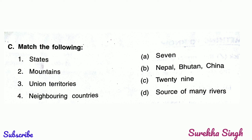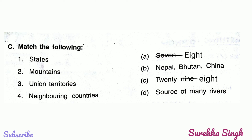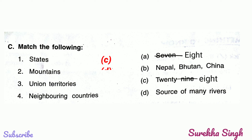Question C: Match the following. Before doing this question, let me tell you something about our states and union territories. At present we have 28 states and 8 union territories, so I have made the changes in option A and option C accordingly. Now let's match it. 1. States — they are 28 in number, so we will match with option C.